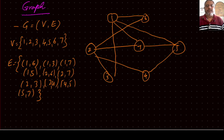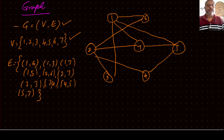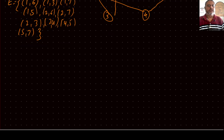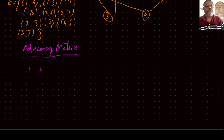There are different ways to represent a graph. One way is as a pair consisting of a set of vertices and a set of edges. Another way is to represent the whole thing in the form of an adjacency matrix, which talks about whether things are connected or not.